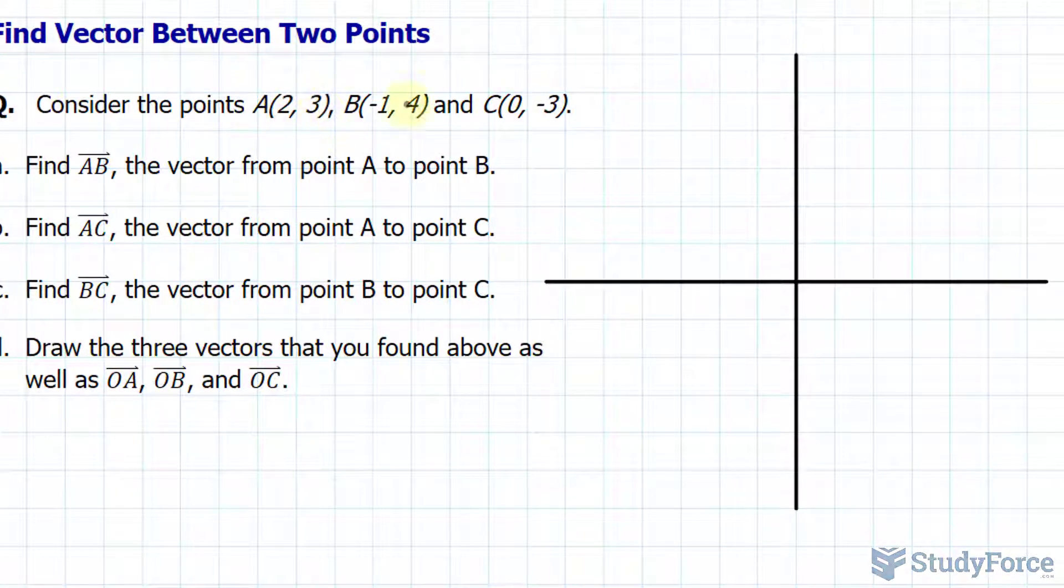We have the point A at (2, 3), which is over here, and the point B at (-1, 4), and the point C being at (0, -3).